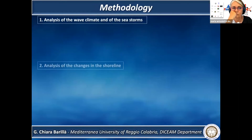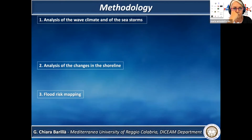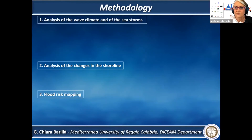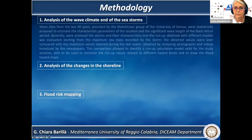The methodological approach consists of three phases. The first phase regards the analysis of the wave climate and of the sea storms. The second phase regards the analysis of the shoreline change, and the last phase regards the flood risk mapping.